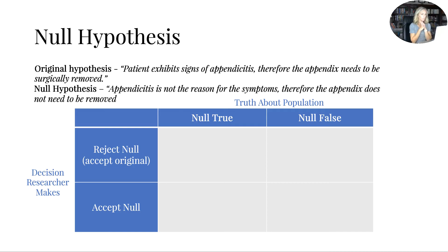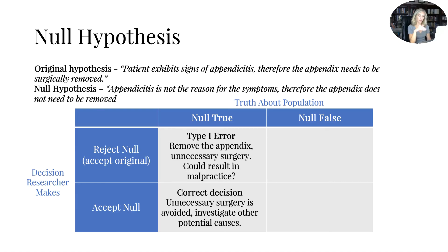So let's look at this in real world terms. Let's say the original hypothesis is that a patient exhibits signs, symptoms, of appendicitis, meaning their appendix is about to explode. Therefore, the appendix needs to be surgically removed. That's the original hypothesis. A medical doctor has to consider the null with any surgery. So the null would be appendicitis is not the reason for the symptoms. Therefore, the appendix does not need to be removed. They've got to consider both. So let's go through each one here. Let's say that they accept the original, it's appendicitis, but actually the null is true, meaning they remove the appendix, but the patient has unnecessary surgery and could result in malpractice. Oh, that's not good.